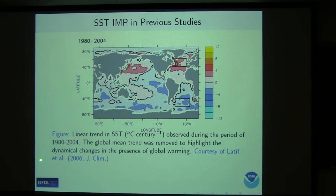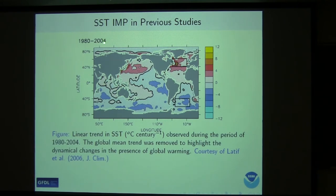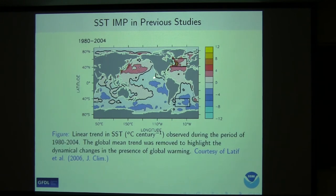Because this is our first exercise in decadal predictability, we want to verify the pattern is correct. We find one verification from observations: the medium trend from 1980 to 2004, because the AMO was in a cold phase around 1980 and warm phase in 2004. The observation also shows warming in the Northern Hemisphere and cooling in the Southern Ocean, with a strong signal in the North Atlantic — consistent with our leading predictable component. This gives us reasonable confidence in our results, and the advantage is that we can use the dynamic model to predict this pattern.